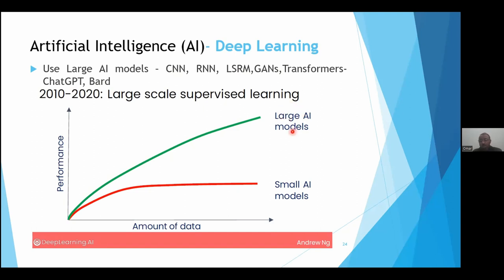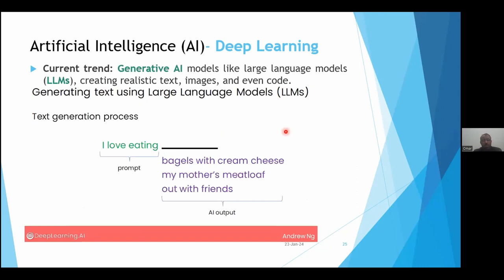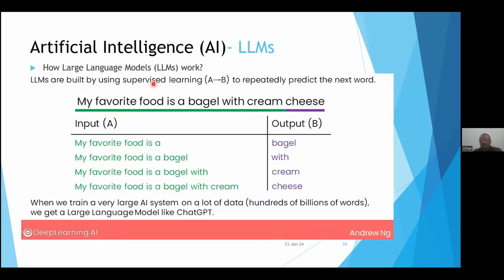Different types of neural networks exist: CNNs for images, RNNs and LSTMs for text data, GANs, and transformers. ChatGPT and Bard are actually types of transformers — these are large AI models that can benefit from big data because they are big, complex models. In language models, traditional models predicted what comes next in a sentence. Recent language models have the capability of question answering, trained using supervised machine learning: 'My favorite food is a bagel' — the next word is the label.